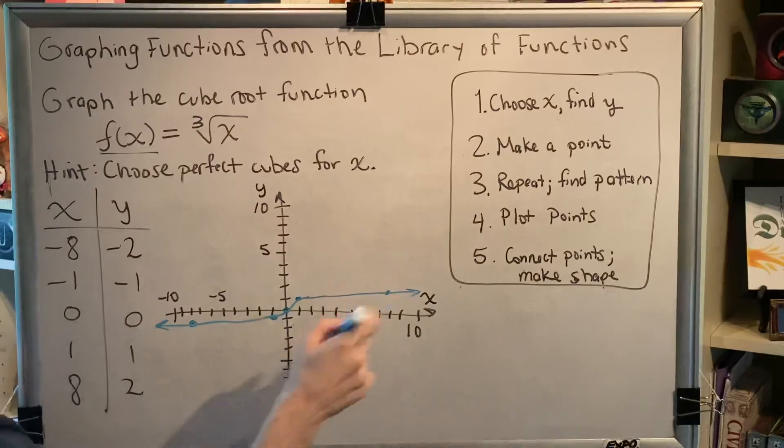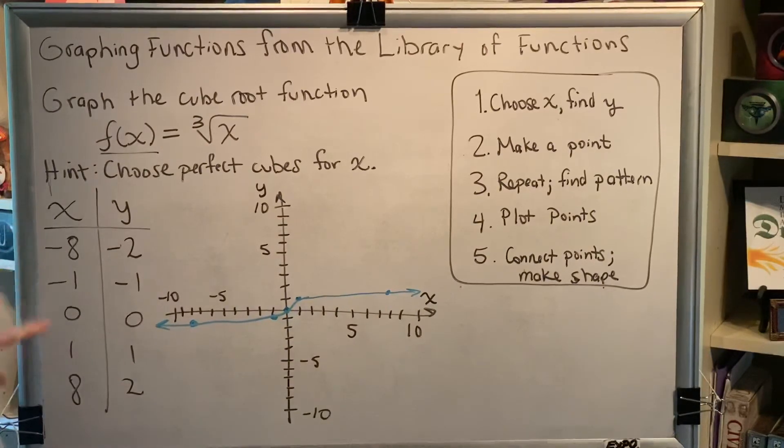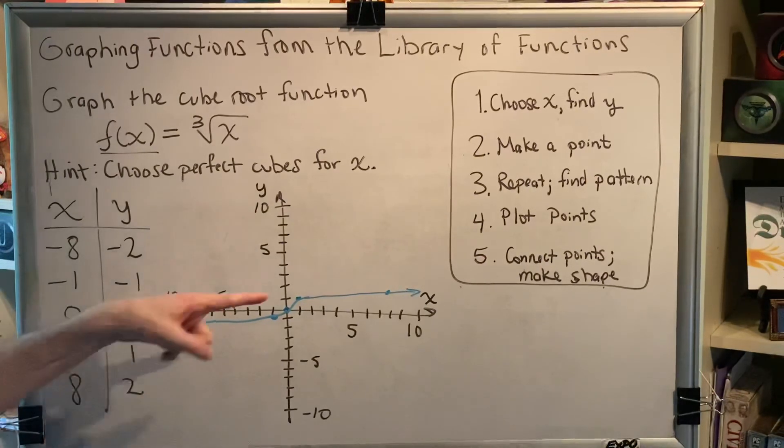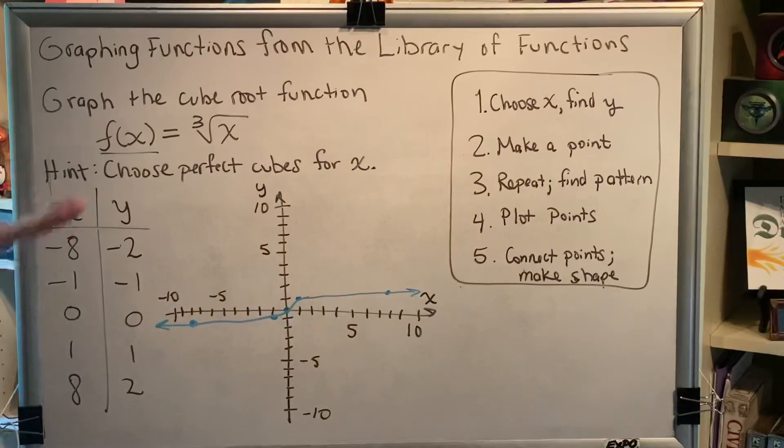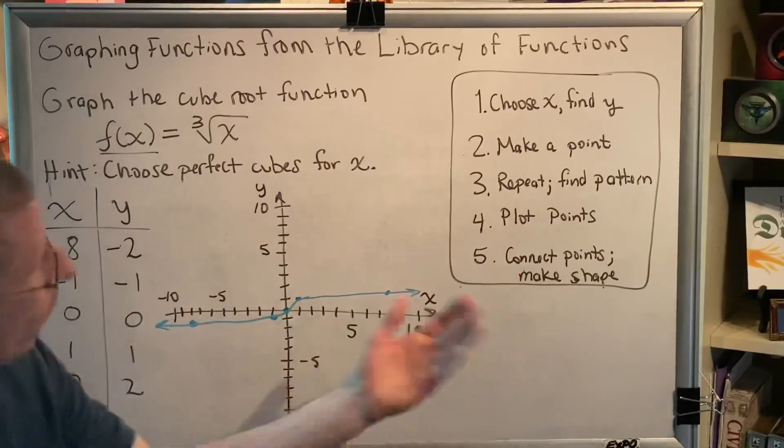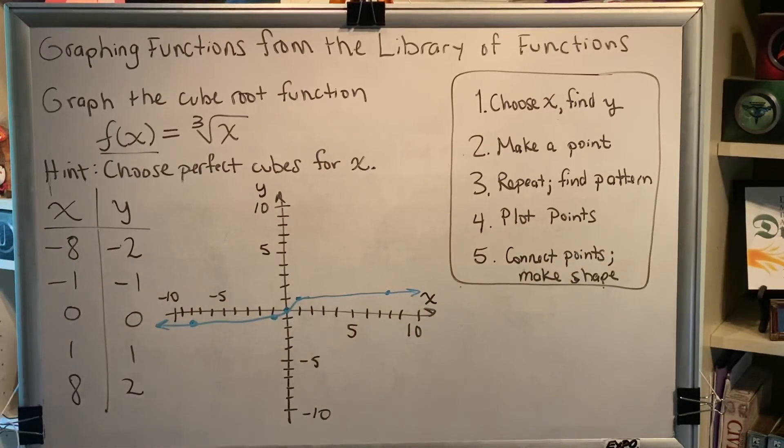And the reason for the arrows is because these x values continue forever. For example, the next perfect cube after 8 is 27, so we would get the point 27, 3, which is way over there. This list goes forever up and forever down. Correspondingly, the graph goes forever right and forever left. This is the graph of our cube root function.